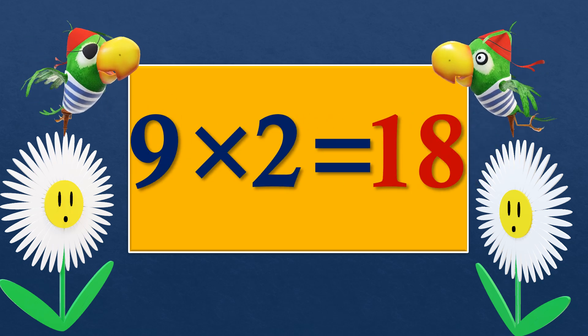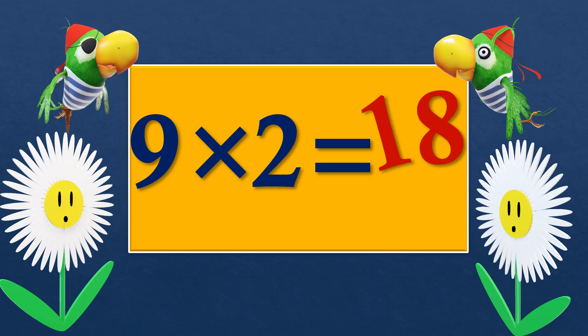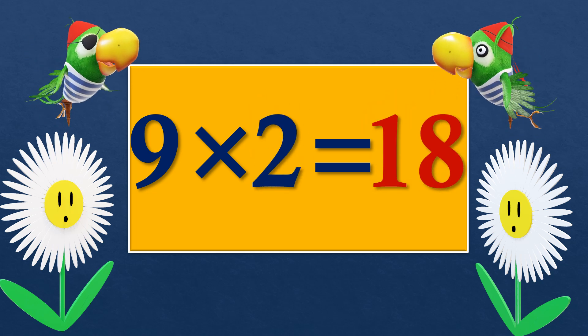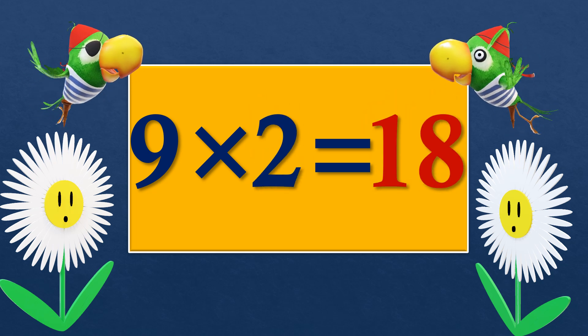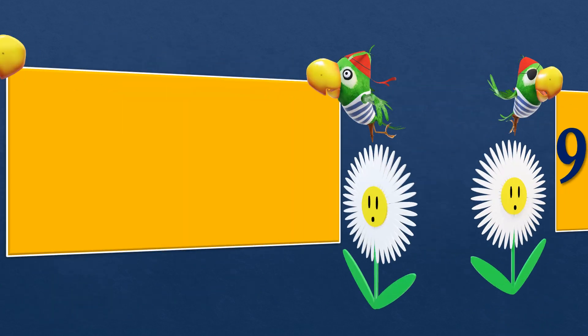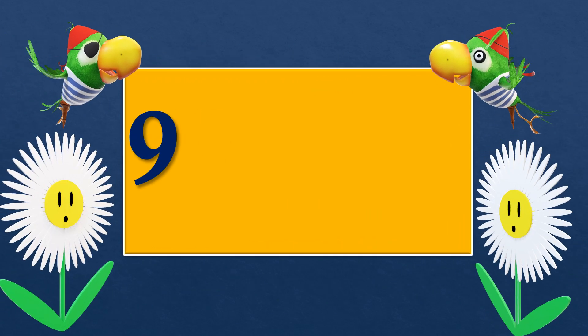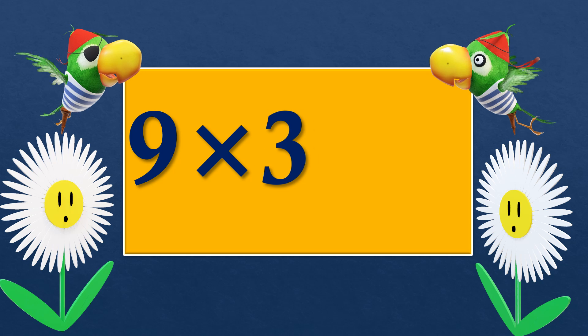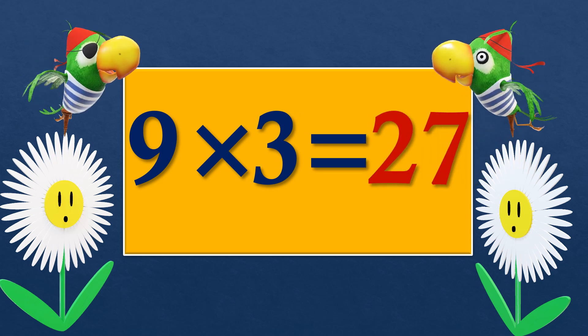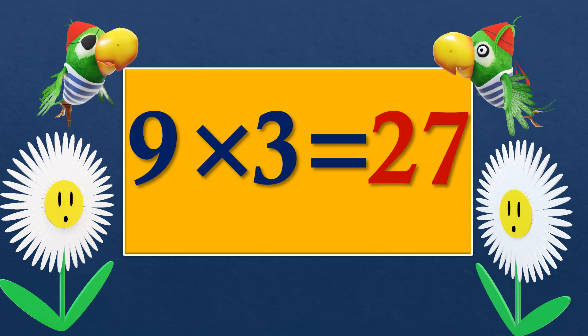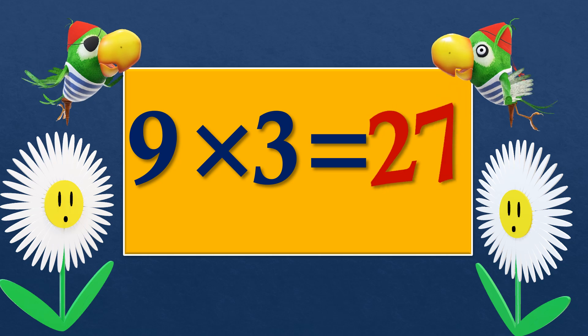9 twos are 18. 9 twos are 18. 9 threes are 27. 9 threes are 27.